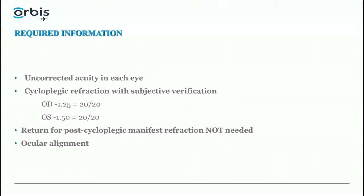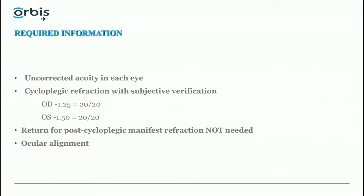This also means I may modify the cycloplegic refraction based on vision. For example, if retinoscopy finds minus 1.00 and they're 20/30, but minus 1.25 gives 20/20, then I prescribe minus 1.25 equals 20/20. Returning for a post-cycloplegic manifest refraction is not needed in children — it is easy to prescribe from the cycloplegic refraction both for hyperopia and myopia, and having them return is a waste of a visit.